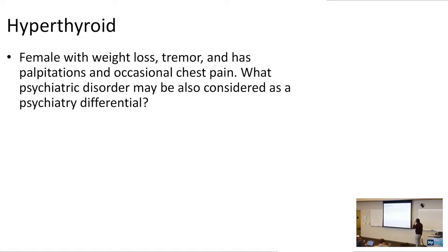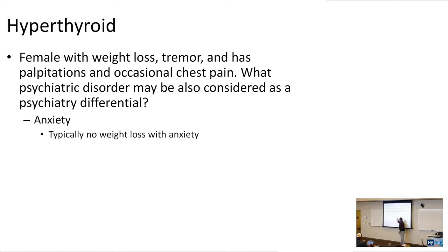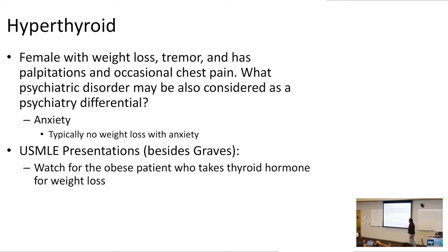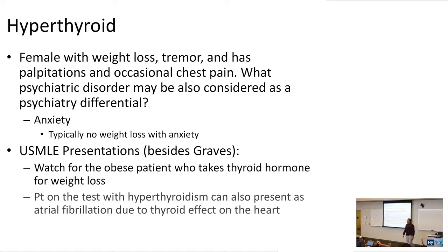A female with weight loss, tremor, palpitations, and occasional chest pain — the psychiatric differential includes anxiety or panic attack. You differentiate hyperthyroidism from anxiety by the weight loss: patients with anxiety typically don't have weight loss on USMLE, whereas hyperthyroidism increases basal metabolic rate causing weight loss with anxiety-like symptoms. Watch for the obese patient taking thyroid hormones for weight loss, and note that hyperthyroidism can also present as atrial fibrillation — thyroid hormone dysregulates the electrical activity of the heart.